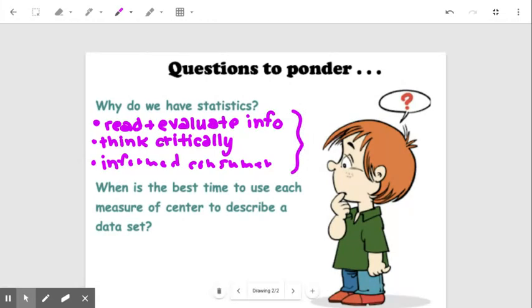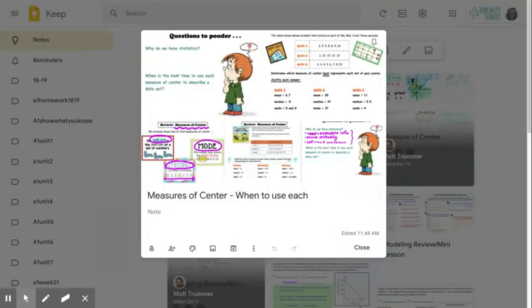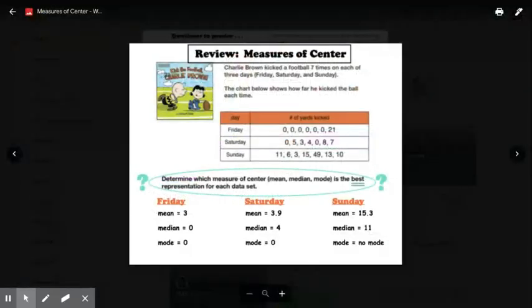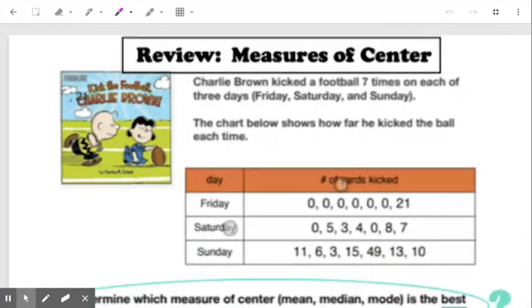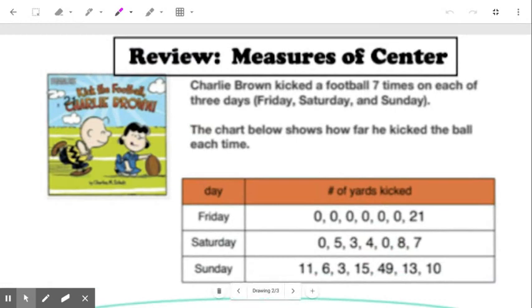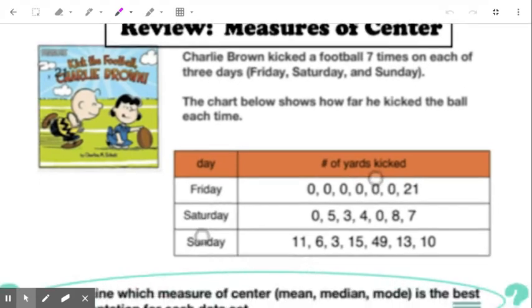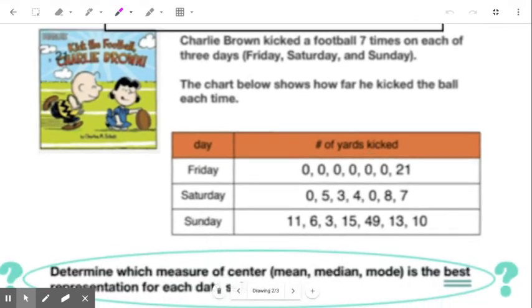Now we'll talk about the other question in just a minute. So the next thing I want to do is talk about this example. So it says Charlie Brown kicked a football seven times on each of three days: Friday, Saturday, and Sunday. The chart below shows how far he kicked the ball each time. So you can see on Friday, he kicked a lot of zeros, which probably means that Lucy picked up the football all the time, except for the last one. She let him kick it and he kicked it 21 yards.